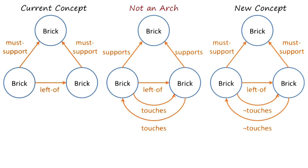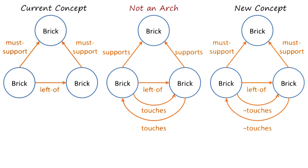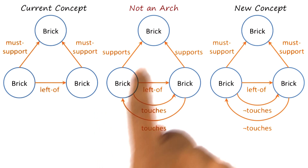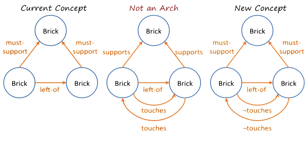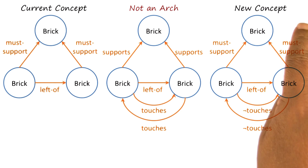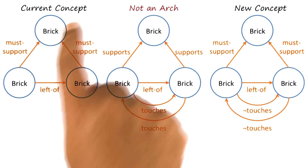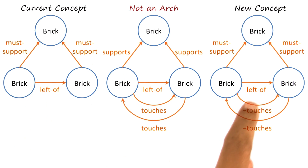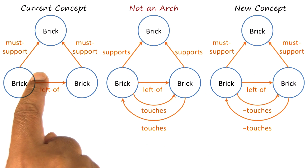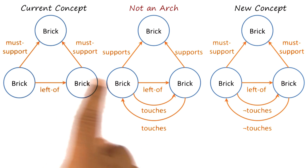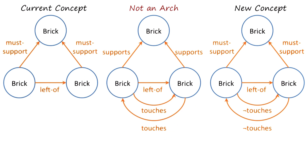We have come across a different notion of incremental concept learning earlier. In that technique, we started with the current concept definition. Then a new example would come about — in this case, a negative example, not an arch. And then a new concept characterization would be constructed by revising the concept characterization that we began with.